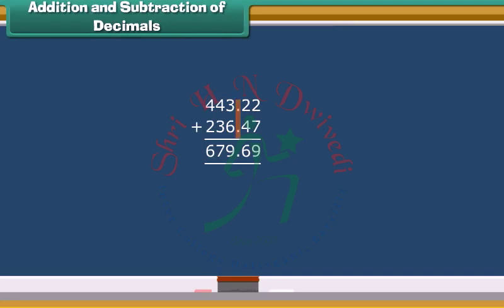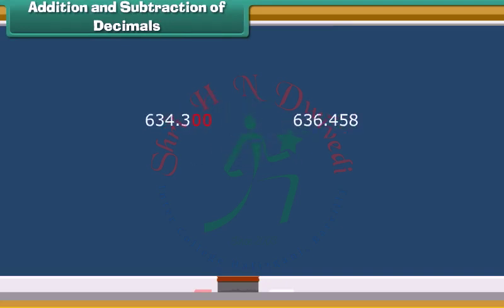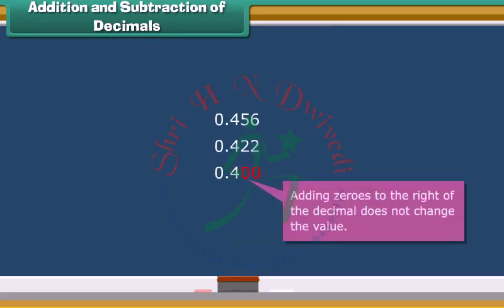Also, decimal numbers are easier to compare just by adding zeros at the end of the shorter number to make the numbers of same length. And you can tell right away which number is bigger. Remember, adding zeros to the right of the decimal does not change the value.